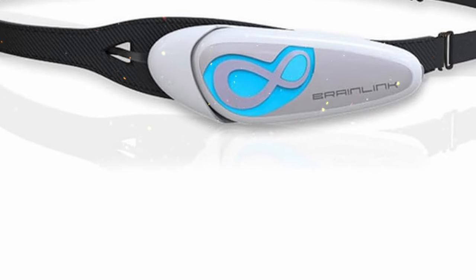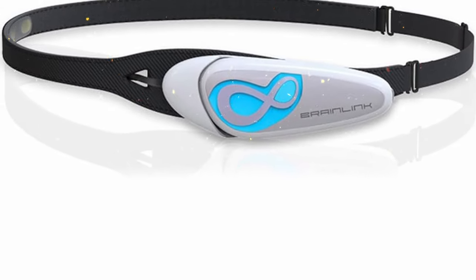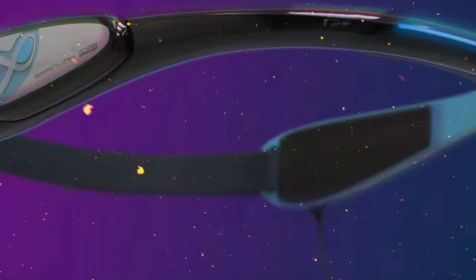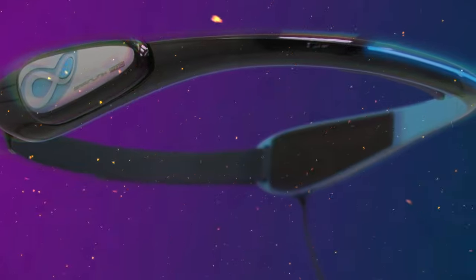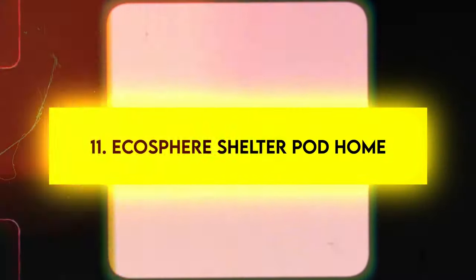Silent communication can be crucial in dangerous situations. The Brain Link keeps you connected without making a sound. Real-world application. The Brain Link lets you strategize silently, giving you a huge tactical advantage. Number eleven: Ecosphere Shelter.